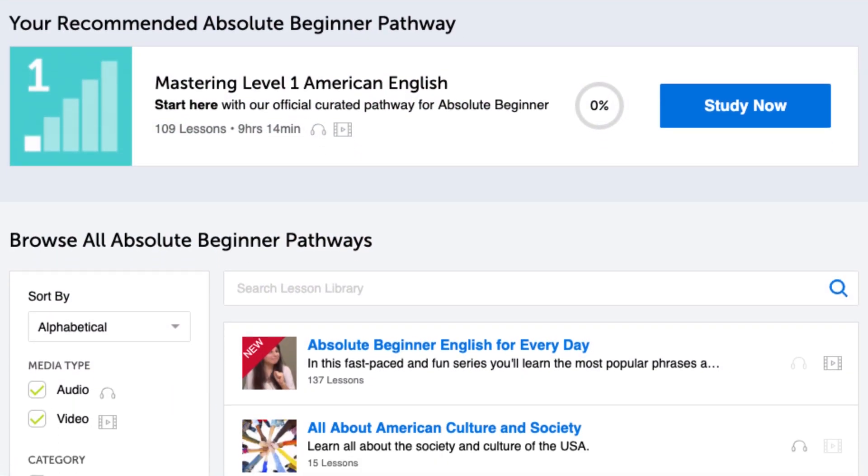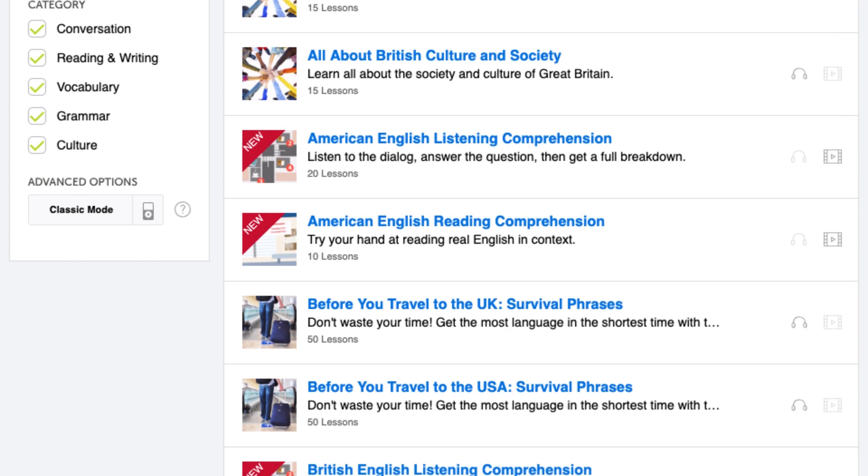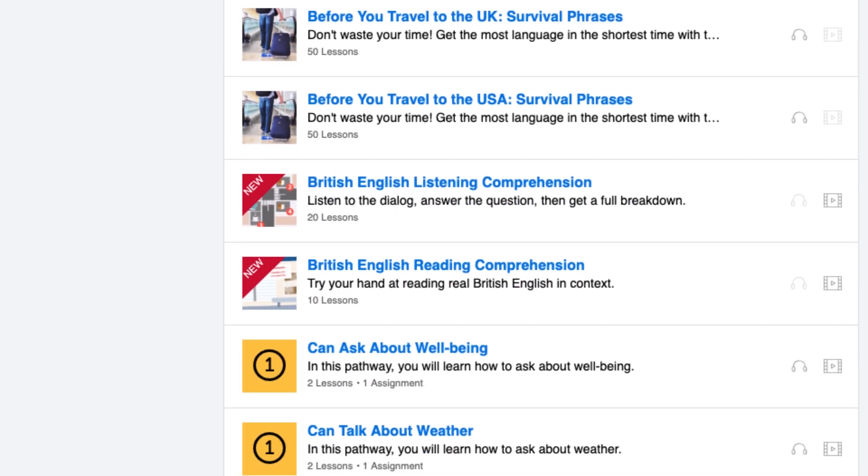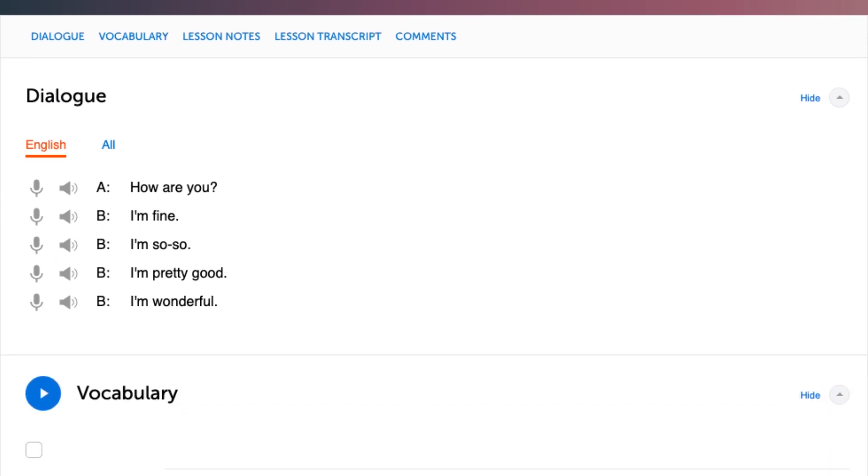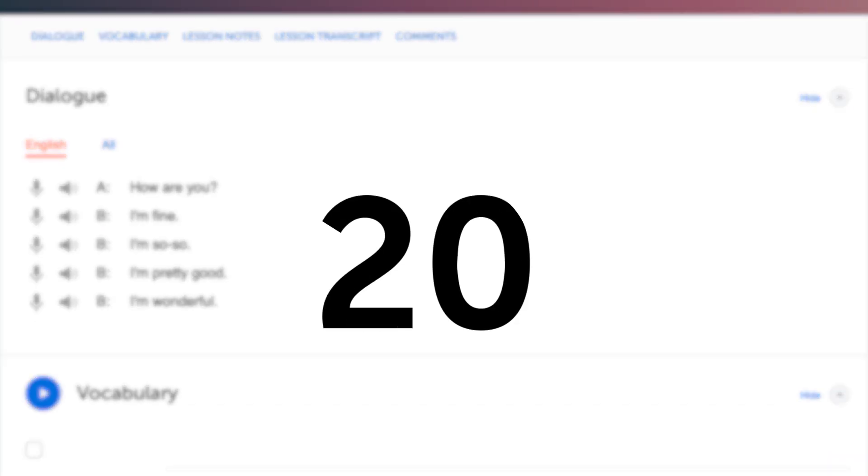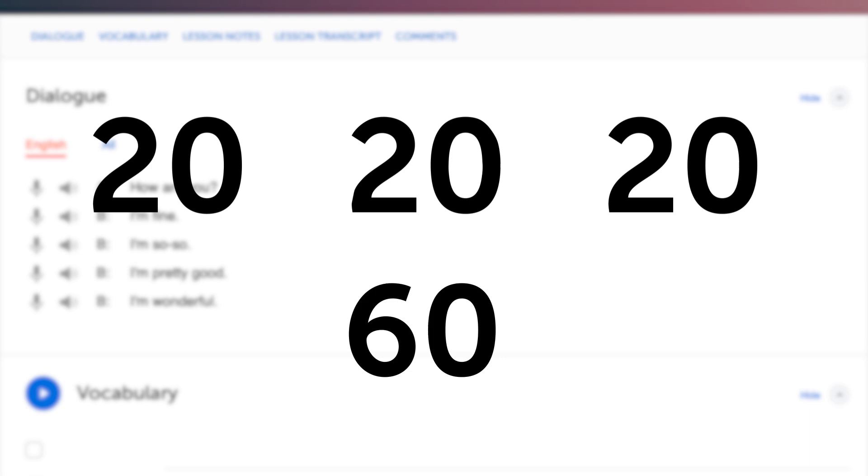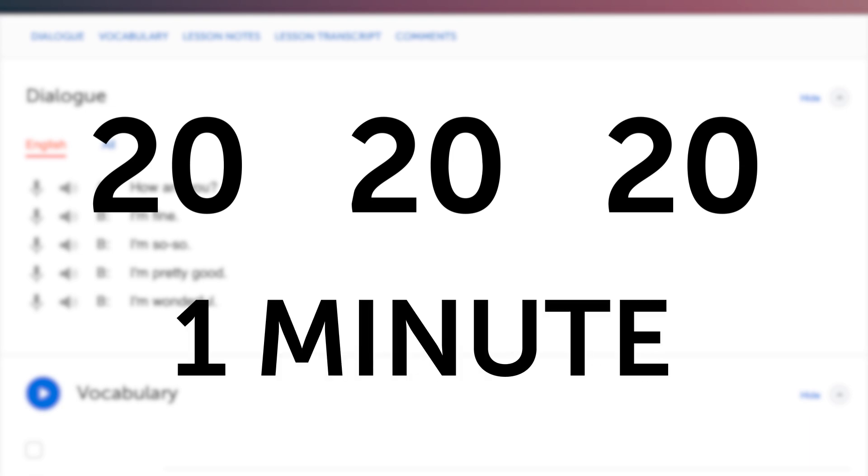With our audio lessons, the absolute beginner level ones, we know that three or four audio lessons can help you master about one minute of conversation. That's because the dialogue tracks are about 20 seconds. So 20 seconds apiece, that's 60 seconds, one minute. Now you know the return on your time.